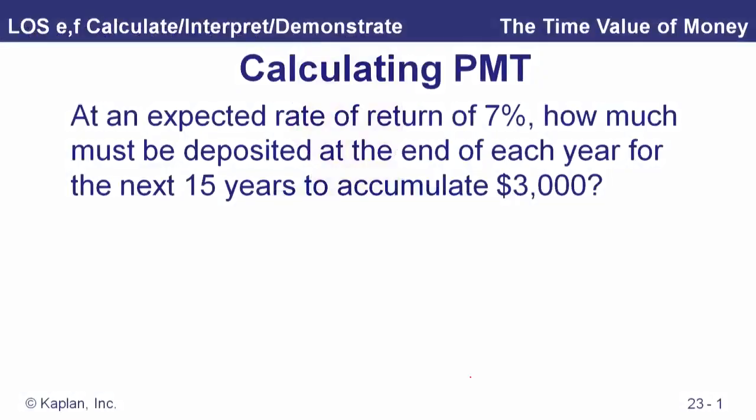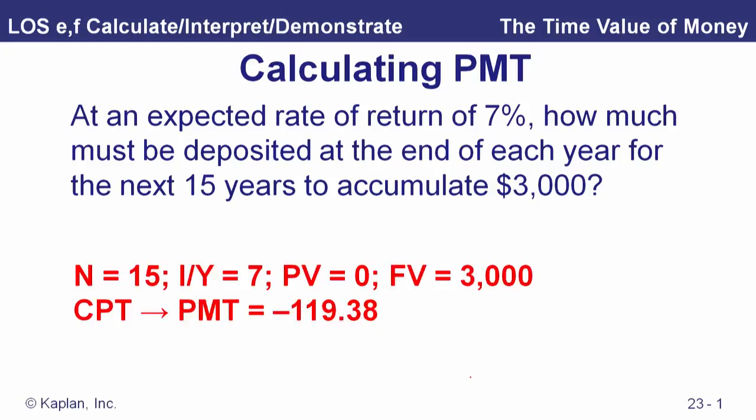We can use those time value of money keys to calculate any of the five variables: N, interest rate I/Y, future value, present value, and payment. Here we'll put in four of them and calculate the payment. With an expected rate of return of 7%, how much must be deposited at the end of each year for the next 15 years to accumulate $3,000? N is 15, interest rate is 7%, present value is zero, future value is $3,000 — so the payment is $119.38, entered as a negative value.